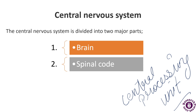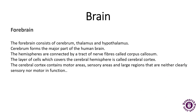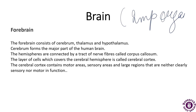The brain is one of the most important, largest, and central organs of the nervous system. It is considered the control unit of the nervous system and helps us in discovering new things, remembering, understanding, making decisions, and many more functions.